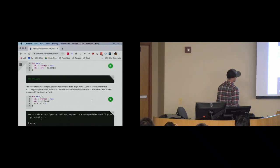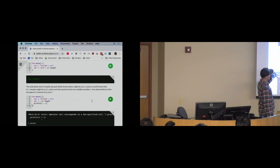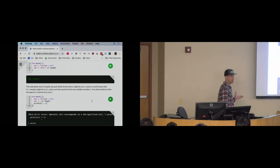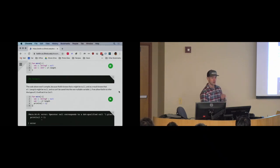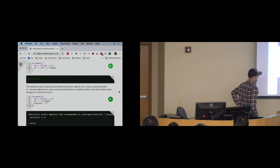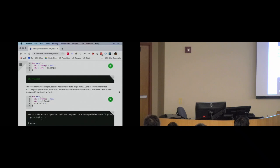Whenever Kotlin sees you working with something that could be null, it will force you to use the safe dot operator. You might think this is going to be a huge pain, but it turns out to be pretty nice — because Kotlin also knows when nullable values could be null and does a good job of not forcing you to use this when you don't need to.